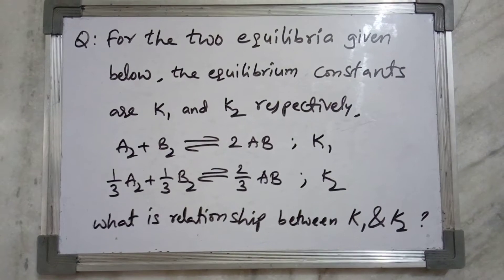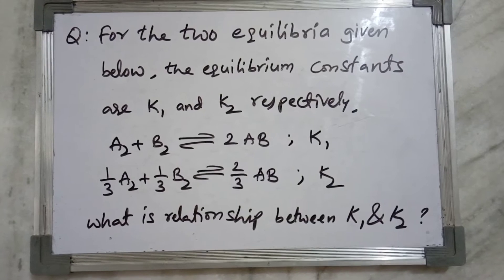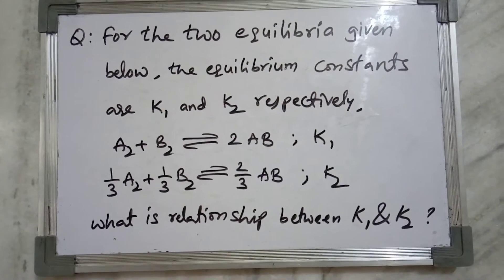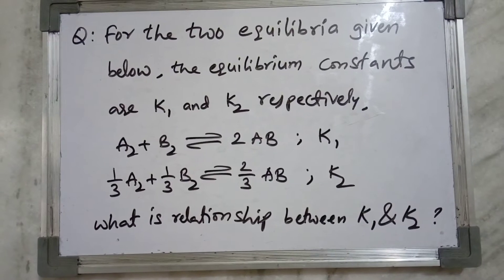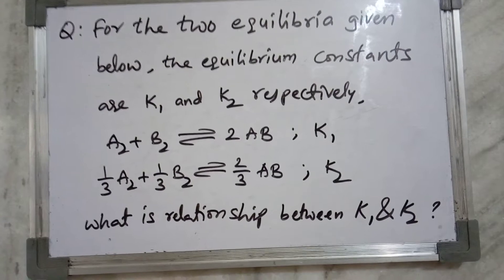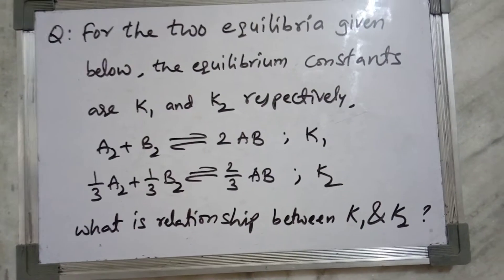The equilibrium constants are K1 and K2 respectively. A2 plus B2 equilibrium with 2AB, equilibrium constant K1. One-third A2 plus one-third B2 equilibrium with two-thirds AB. For this equilibrium constant is K2. What is relationship between K1 and K2?